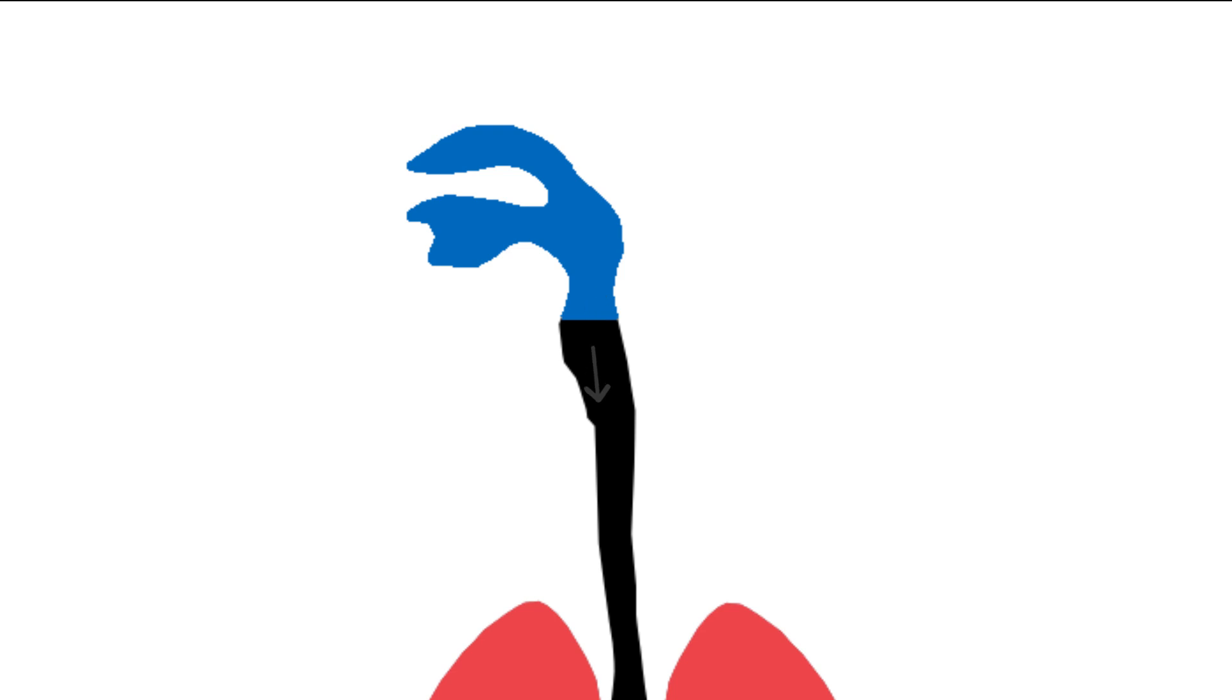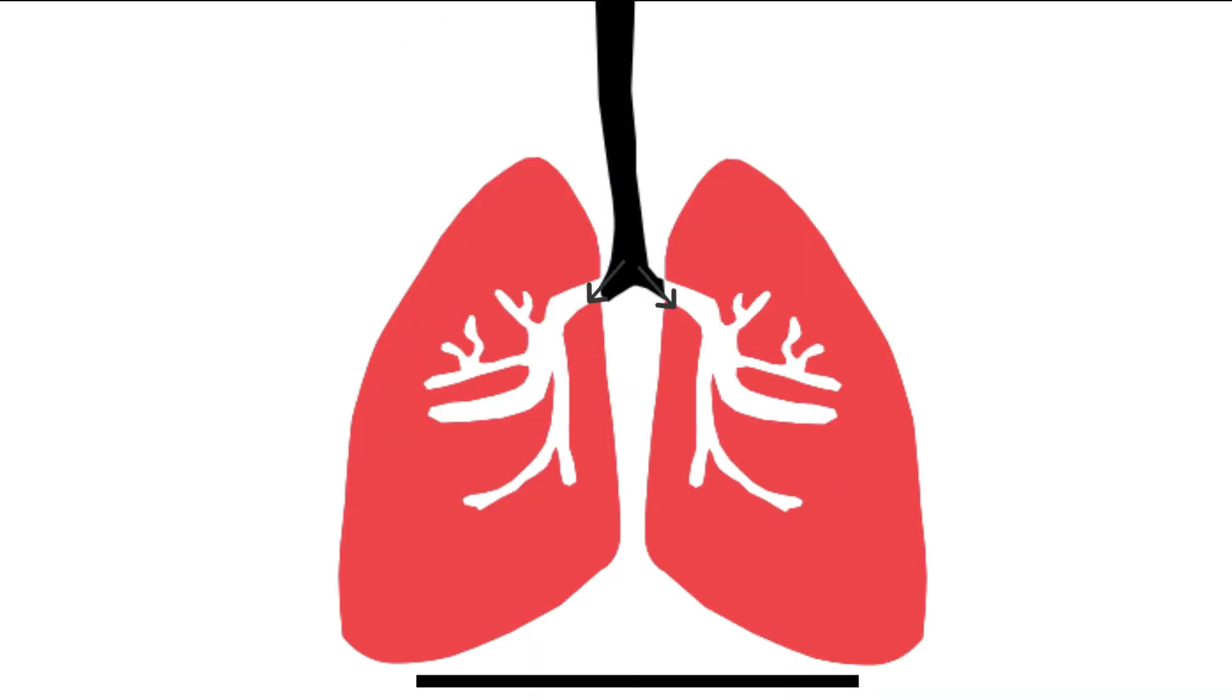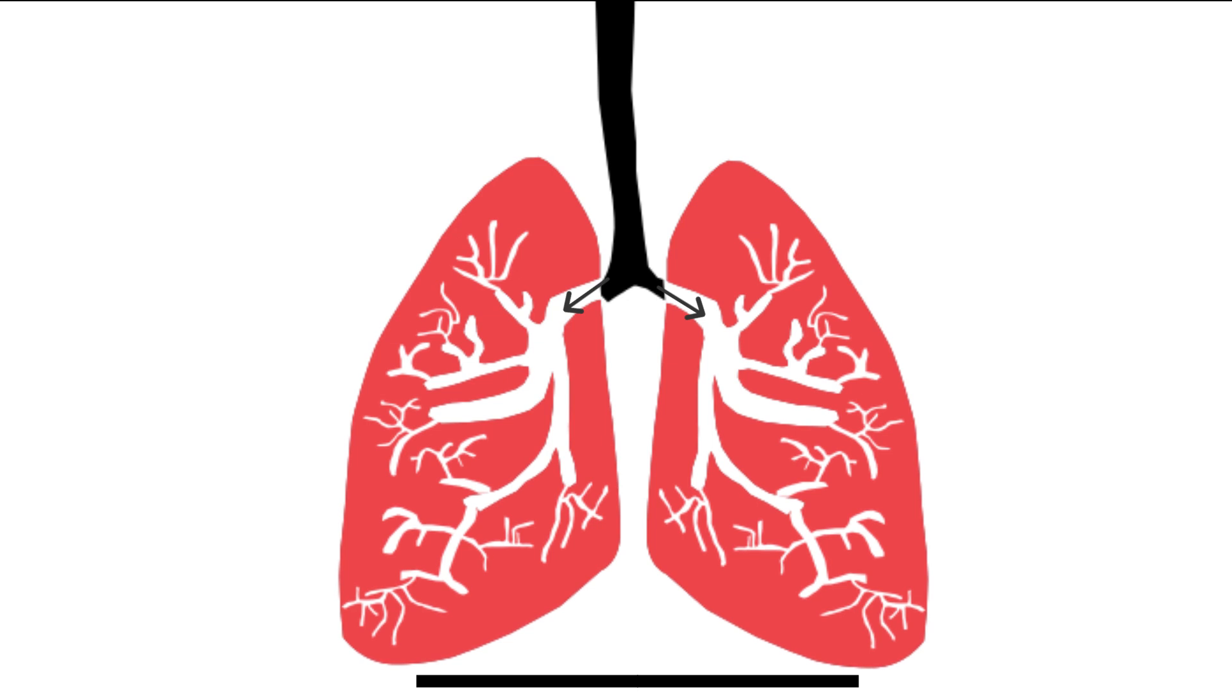Through your windpipe, trachea, and into the bronchi, which is divided into two, one for each lung. Each bronchus divides again and again, becoming narrower and narrower. The tiniest are called bronchioles.